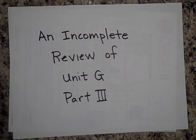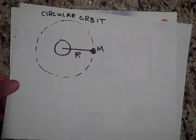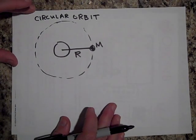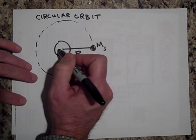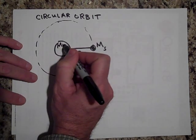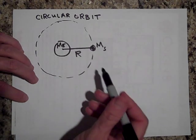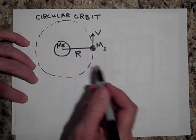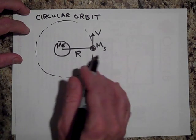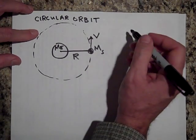Here we are with the third and final part of a review of Unit G — an incomplete review of Unit G. Let's go back to circular orbits. Here's a satellite orbiting, and here's the mass of the Earth. Can you give me the velocity necessary for this circular orbit? Figure that out in terms of these quantities and any constants.